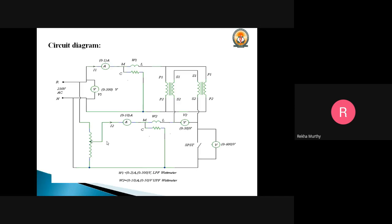Now let's go through the procedure for conducting this experiment. With the SPST switch kept open, make sure the autotransformer is at minimum position and then switch on the supply. The polarities of the secondary voltages of the transformer will be checked by using the voltmeter connected across the SPST switch — that is the 0 to 600 volt voltmeter — which is used just to check the polarities of the secondary voltages.